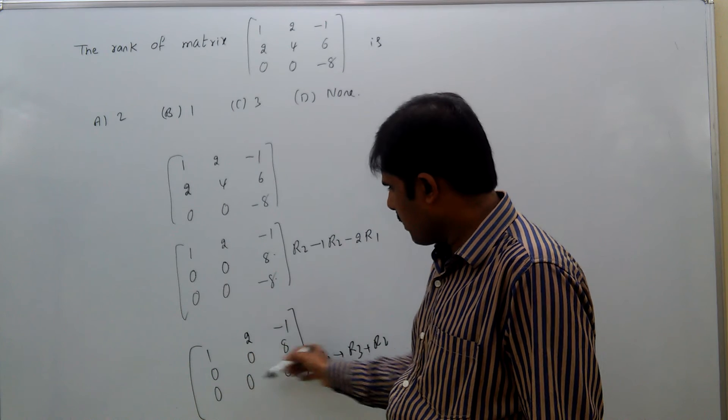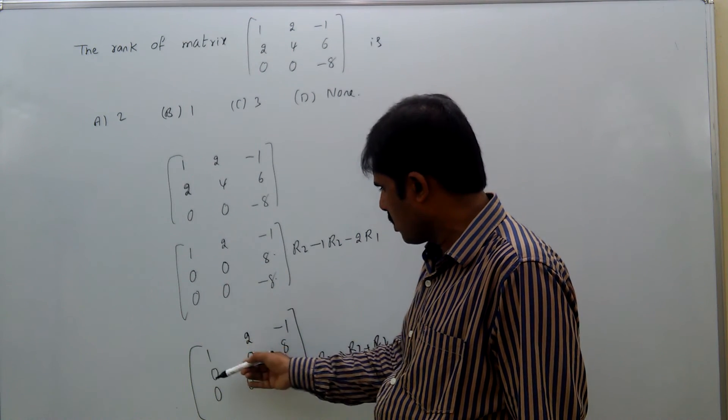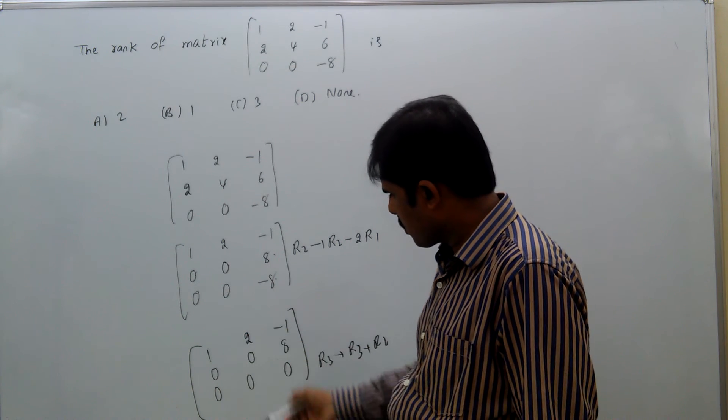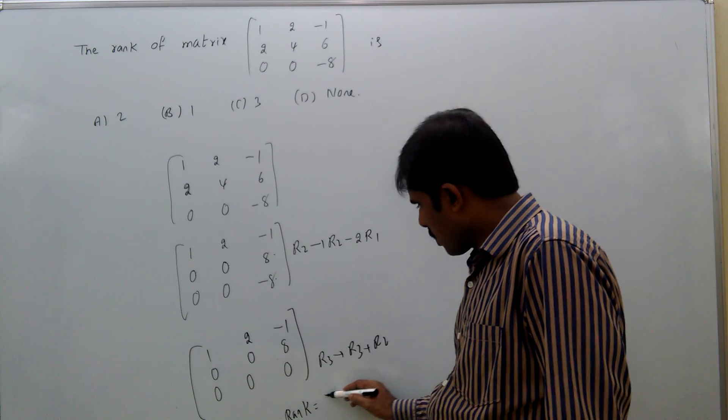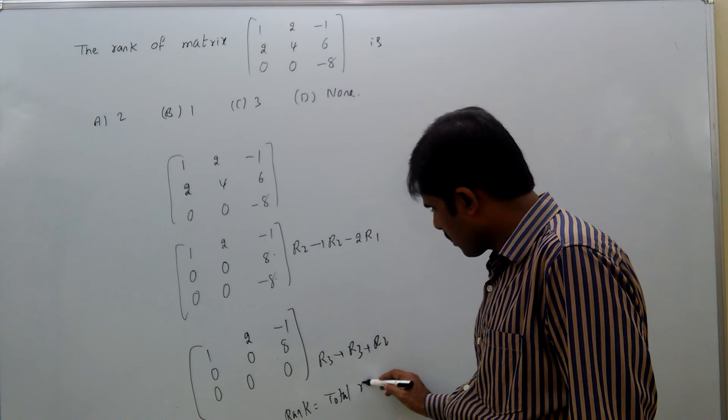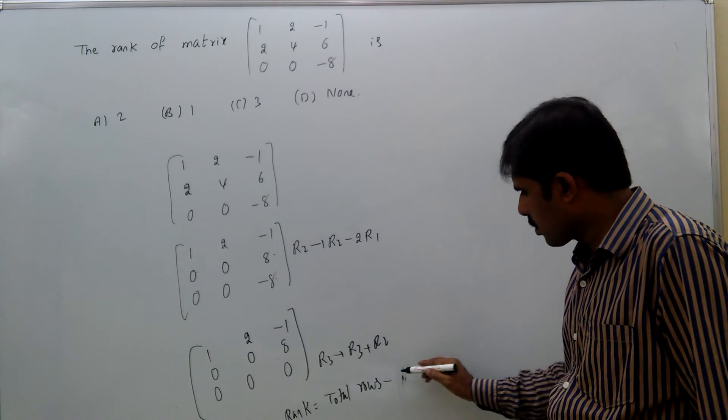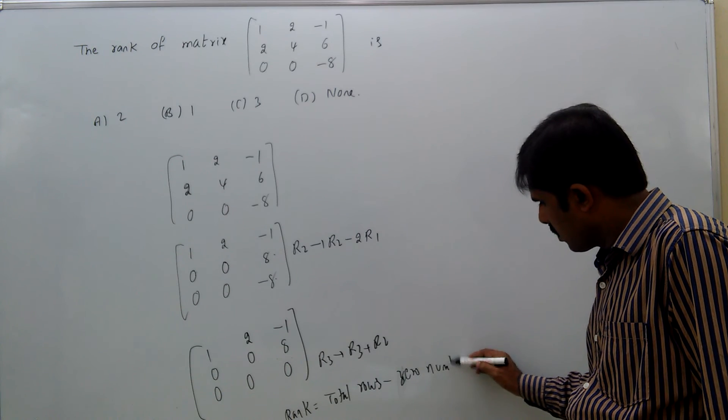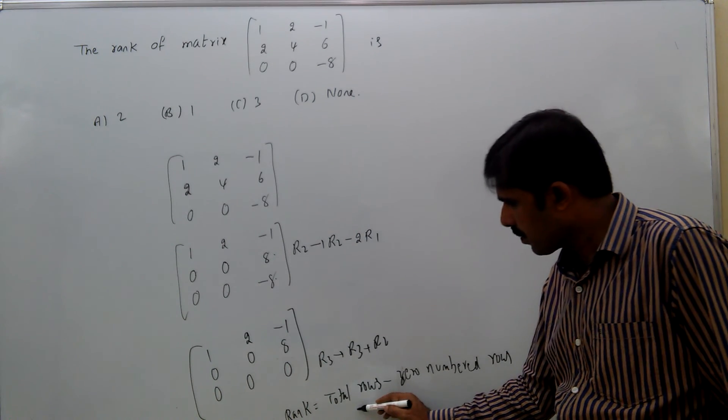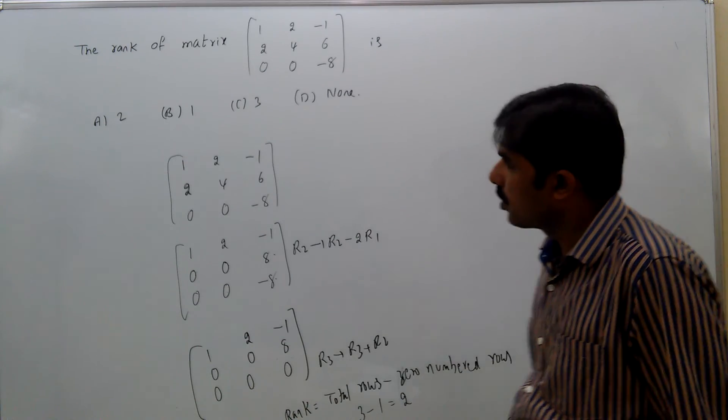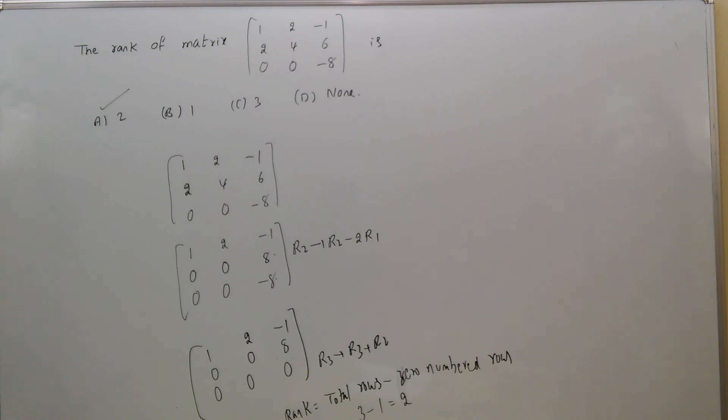Now, if you see, how many non-zero rows are there? The rank equals total rows minus zero numbered rows. That equals 3 minus 1, that equals 2. Answer is A.